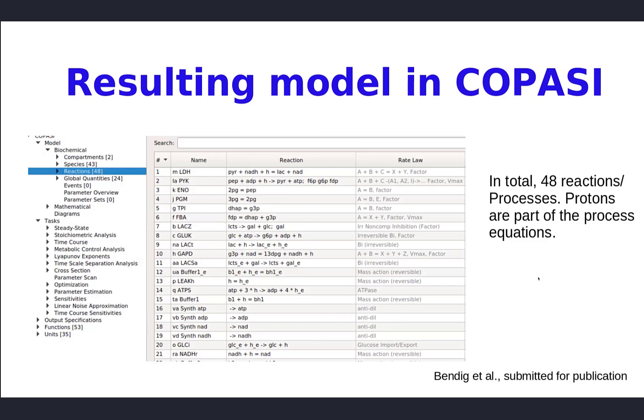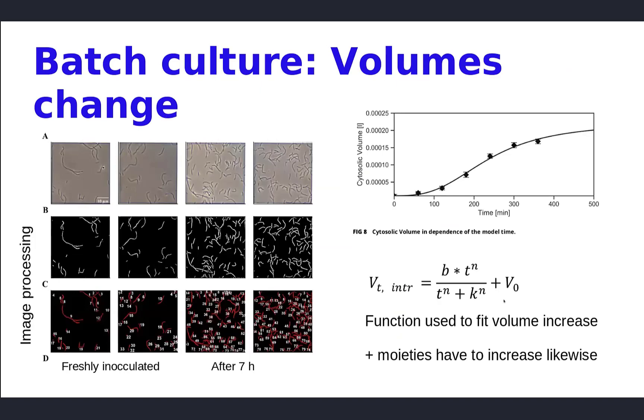It's a batch culture, so the volume changes. Tamara not only measured optical density as a measure of cytosolic volume, but she used machine learning with microscopic pictures to determine cellular volume by image decomposition. Since these bacteria have a rod-like shape, she could estimate the cellular volume in quite high precision, just assuming it's a cylinder.